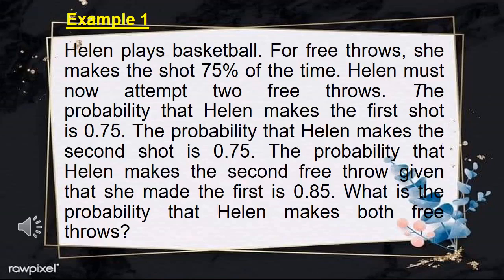To better understand the probability, let us analyze the first example. Helen plays basketball. For free throws, she makes the shot 75% of the time. Helen must now attempt two free throws. The probability that Helen makes the first shot is 0.75, and the second shot is also 0.75. The probability that Helen makes the second free throw given that she made the first is 0.85. What is the probability that Helen makes both free throws?